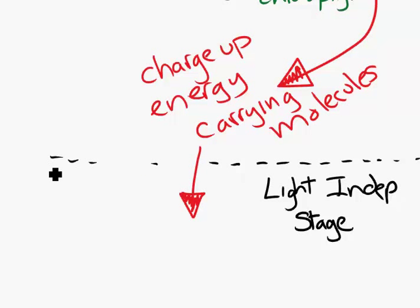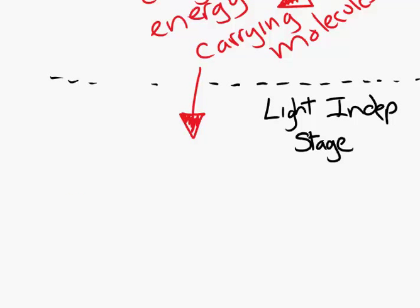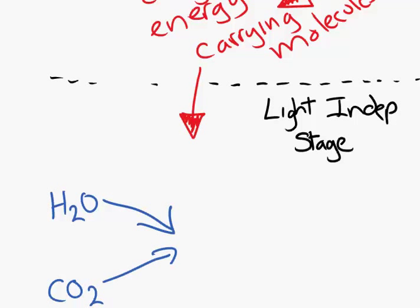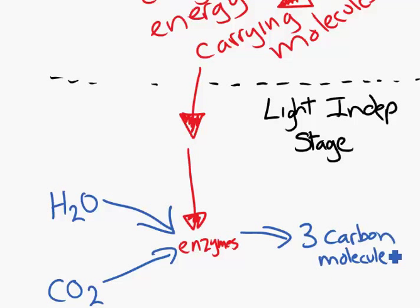Energy-carriers are used to join together some stuff. We bring in H2O and carbon dioxide. Using our energy-carrying molecules and lots of enzymes, it joins it all together to make a three-carbon molecule.